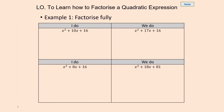Today's lesson we're looking to factorise quadratic expressions. A quadratic expression has an x squared term in it. All of these are quadratic expressions. When we factorise this we're going to end up with two brackets. There's going to be an x term in both of them because x times x will give us x squared.